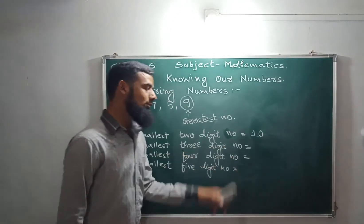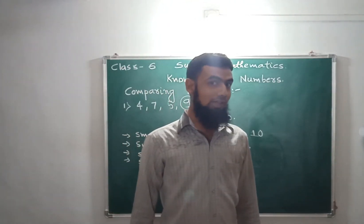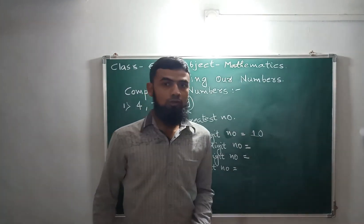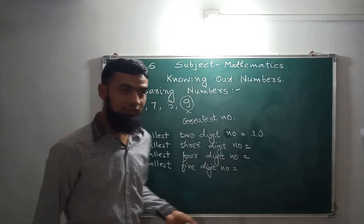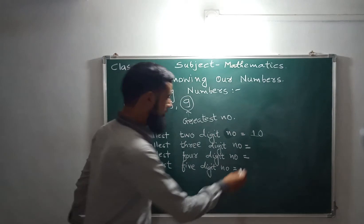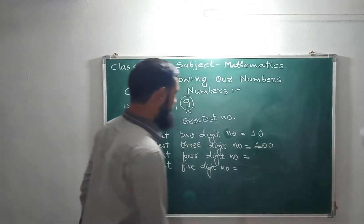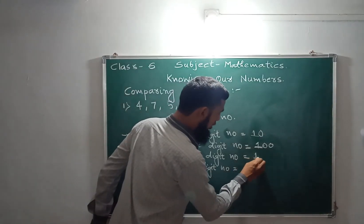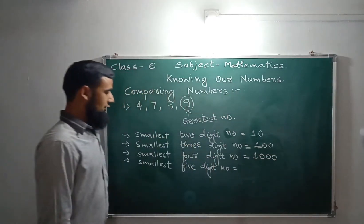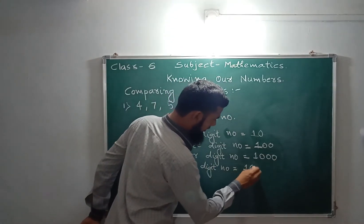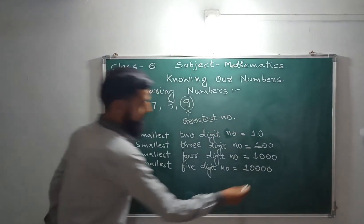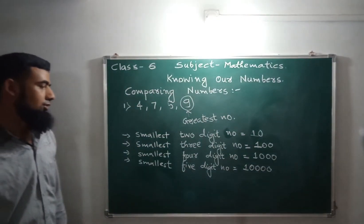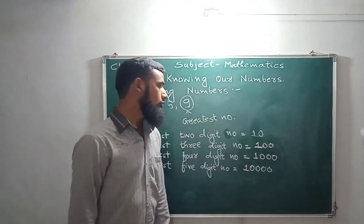The smallest three-digit number: after 99, the greatest two-digit number, comes 100. So 100 is the smallest three-digit number. The smallest four-digit number is 1,000, and the smallest five-digit number is 10,000. Clear?